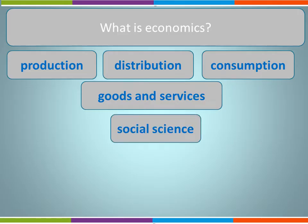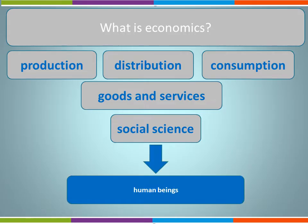Economics is what we call a social science. This means that it deals with human beings — it's a study of human behaviour. It looks at how we interact and how decisions are made. One of the issues is it's unpredictable; we don't always act in the same way.